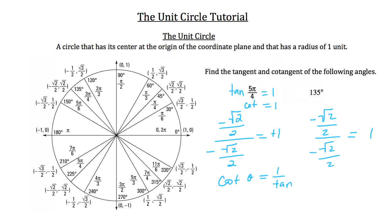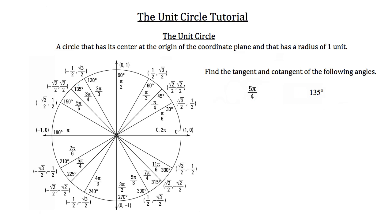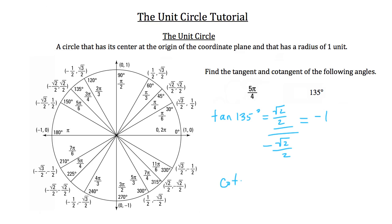Let's do one more example with 135 degrees. The tangent of 135 degrees is the sine value — root 2 over 2 — divided by the cosine value, which is negative root 2 over 2. We're dividing something by itself, so the magnitude is 1, but a positive divided by a negative gives negative 1. For the cotangent of 135 degrees, it's cosine over sine: negative root 2 over 2 divided by positive root 2 over 2, which is also negative 1.